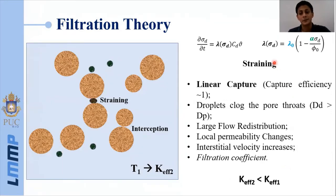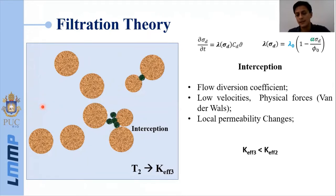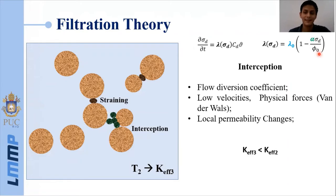The first phenomenon represented is straining. It has a relationship with the filtration coefficient, and we consider that straining is dominant when there exists a linear capture or a capture efficiency of one — meaning if one mole of the oil droplet component enters the model, one mole will be captured. The interception is the second phenomenon, more related with the flow diversion coefficient, and it represents the physicochemical interactions between the oil droplets and the rock surface.